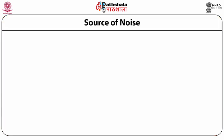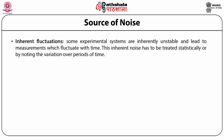Let us now discuss the different sources of noise. The first is due to inherent fluctuations. Some experimental systems are inherently unstable and lead to measurements which fluctuate with time. This inherent noise has to be treated statistically or by noting the variation over periods of time. Examples include optical fluctuations in starlight, bad electrical contacts, semiconductors, etc.